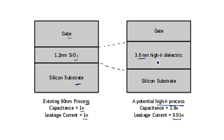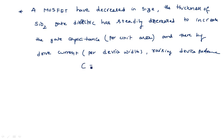With high-k dielectric material at 3 nanometers thickness, some capacitance action is exhibited at the gate because the gate is a polysilicon layer — a conducting layer — and the silicon substrate is also a conducting layer, separated by a dielectric material. So a gate capacitance CG is exhibited. Gate capacitance is calculated as C = εA/d. As the area of the plates increases, the capacitance of this material increases, increasing device performance.